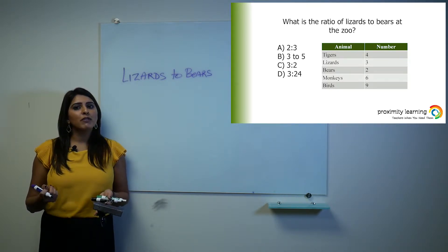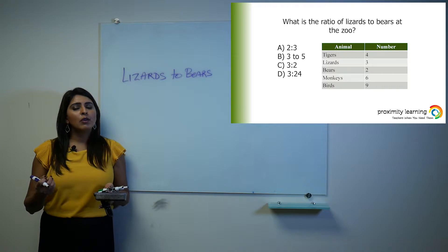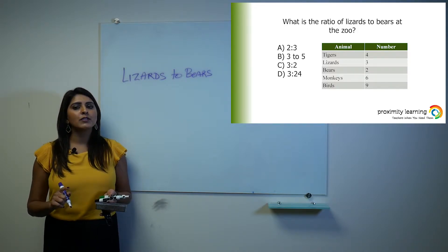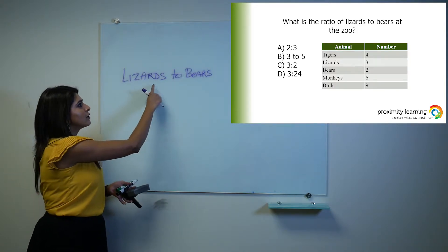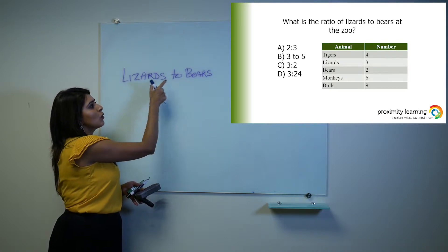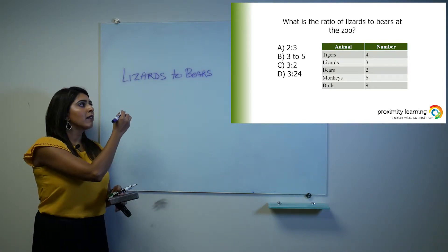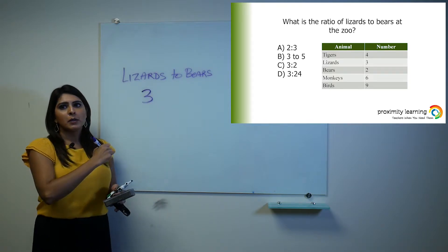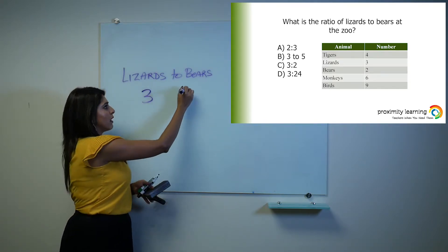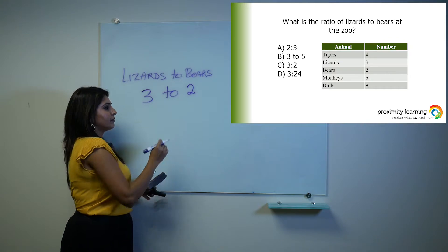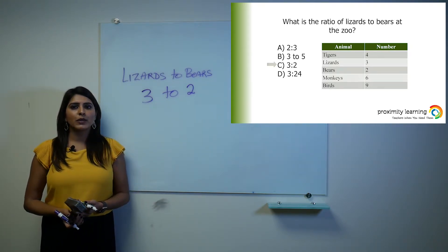Secondly, I want you to pay very close attention to the order of the numbers. If they are asking you for the ratio of lizards to bears, make sure that is the order you answer the question and don't flip it. So I have three lizards and there are two bears. So your final answer here will be answer choice C, 3 colon 2.